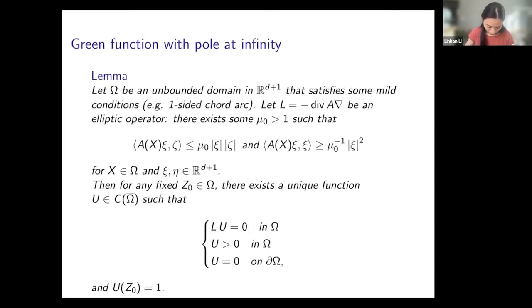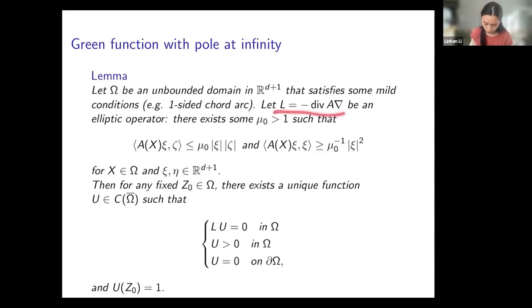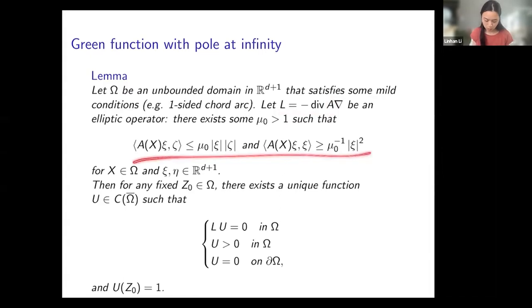Let me first define the Green function with pole at infinity. Let omega be an unbounded domain that satisfies some mild conditions — I will state the precise conditions later. Let L be an elliptic operator in divergence form, where the matrix A consists of real-valued bounded measurable functions satisfying the ellipticity condition.